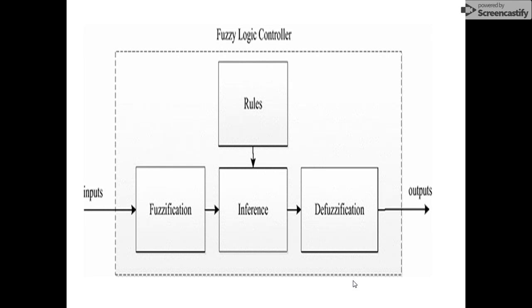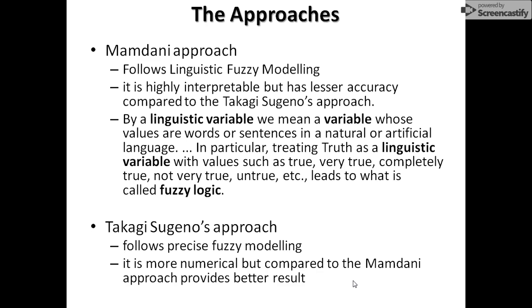After inferencing, the output will be sent to the de-fuzzification module. Because if we have given crisp input, we have to return crisp output to the system. So we converted the crisp input to the fuzzy one, then applied some inference and rules on that one to get a fuzzy output. That fuzzy output will be converted to crisp output through the de-fuzzification module, and that will be our exact desired output.